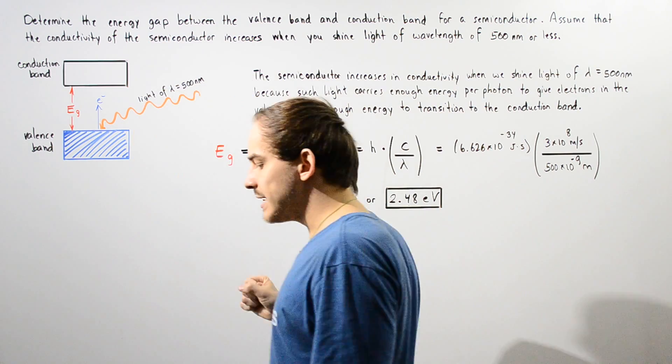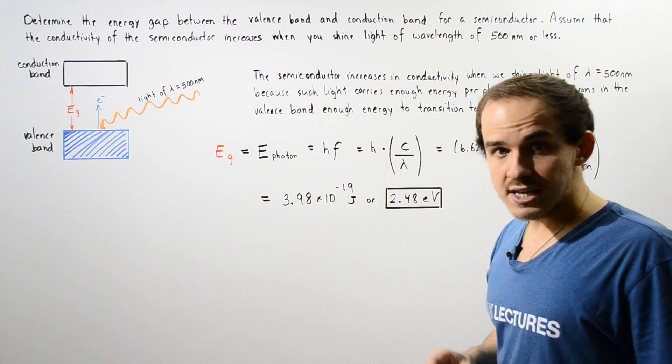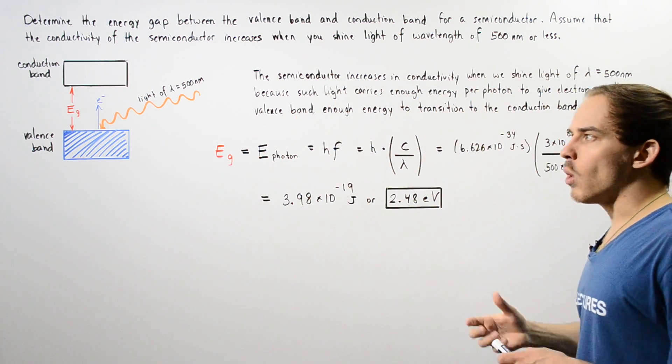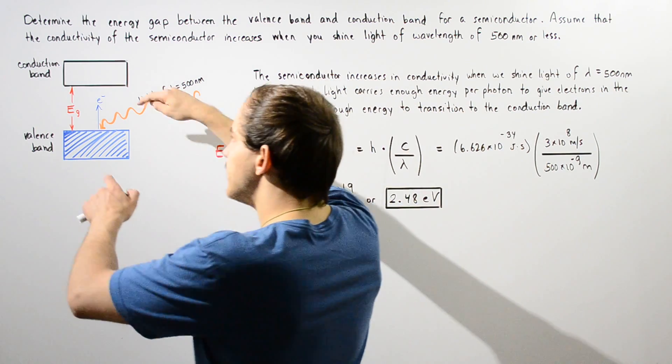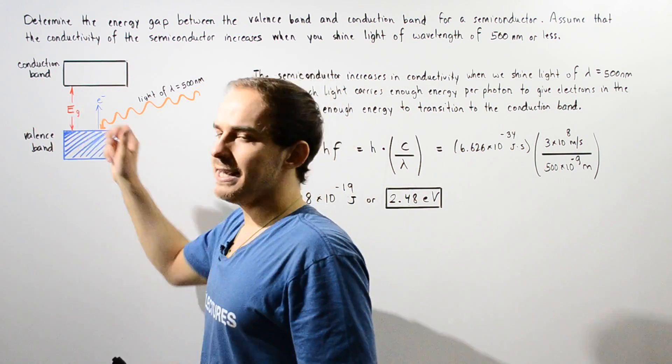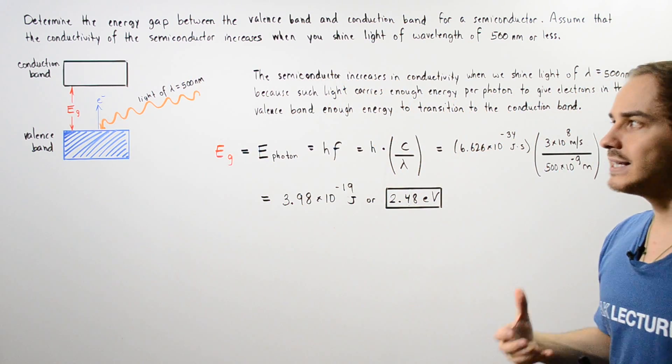Now the conduction band on the other hand does not contain any electron just yet. It contains the unoccupied energy quantum states. The difference in energy between these two bands is given by EG, that is known as the energy gap or the band energy gap.